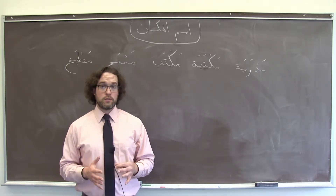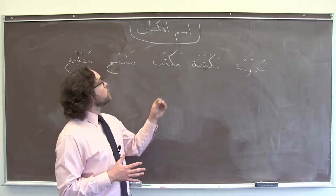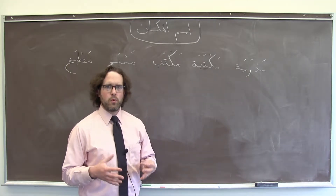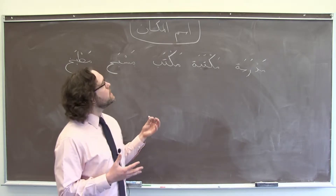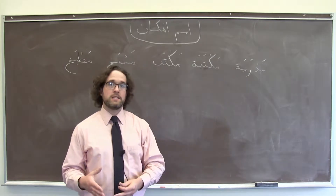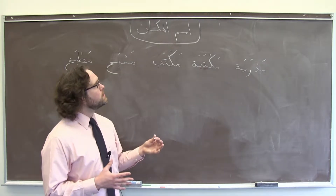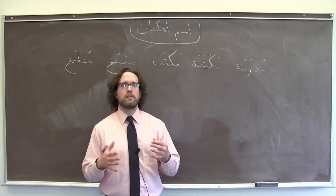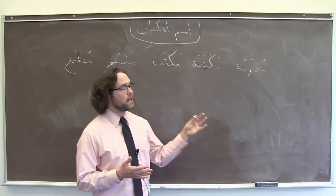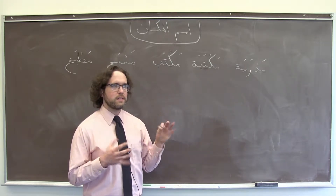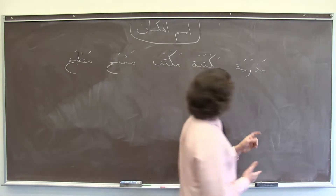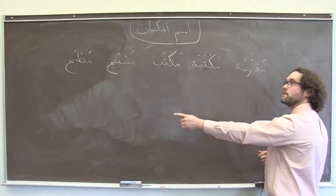Right now we're going to talk about a really useful Arabic word pattern called اسم المكان. اسم المكان literally means 'place name' or 'name of a place.' When we say that, we're not talking about proper nouns — names of specific places like Beirut or New York. We mean instead the place where a certain thing happens. You know by now that verbs are the heart of Arabic, so this pattern allows us to create or recognize nouns that are places where particular actions are undertaken. You probably know a lot of these words already.